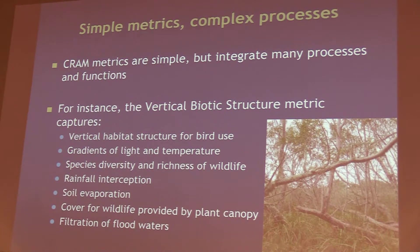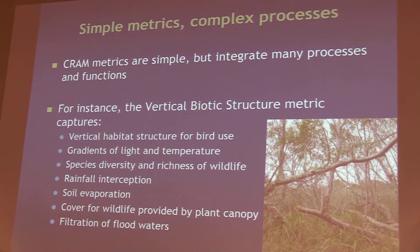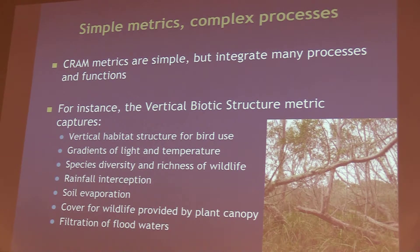On the surface the CRAM metrics seem very simple, but they actually integrate many complex ecological processes and functions. For example, the metric called vertical biotic structure asks the practitioner to observe how many overlapping plant layers exist within the assessment area. This simple observation captures complex processes such as vertical habitat structure for bird use, gradients of light and temperature, rainfall interception, cover for wildlife, and filtration of floodwaters. This is true for every metric.